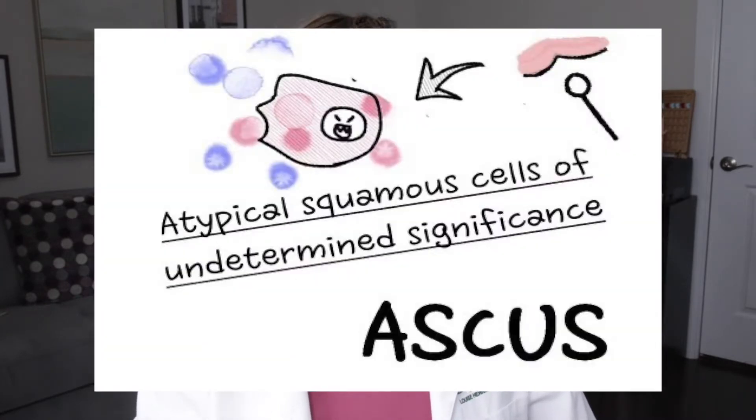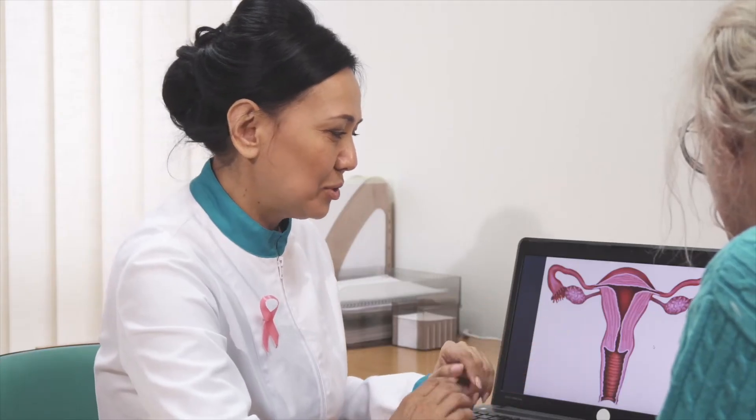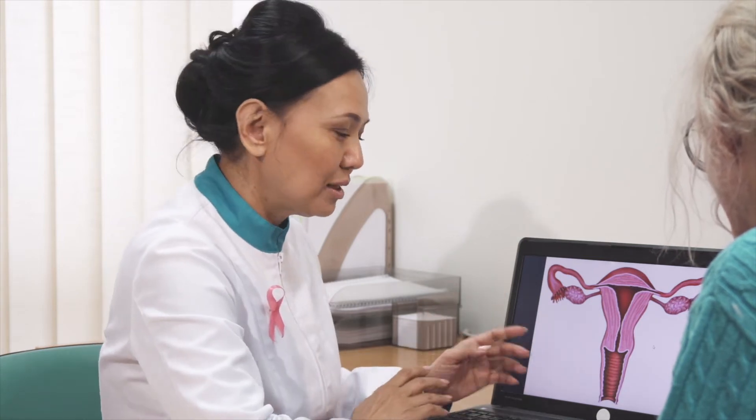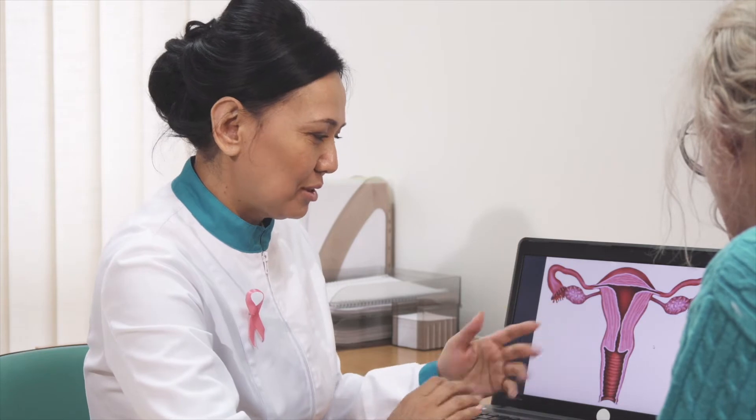Now that we know you have an abnormal pap smear, which is common — if you see the letters ASC-US or ASC-IS, this stands for atypical squamous cells of undetermined significance. To sum it up, your results showed an infection but the lab technician who reviewed your sample was not certain what type of infection. This could also be a cause or result of inflammation, low hormone levels, or benign non-cancerous growths such as a cyst or polyp. When you get an ASC-US result, additional testing is needed.